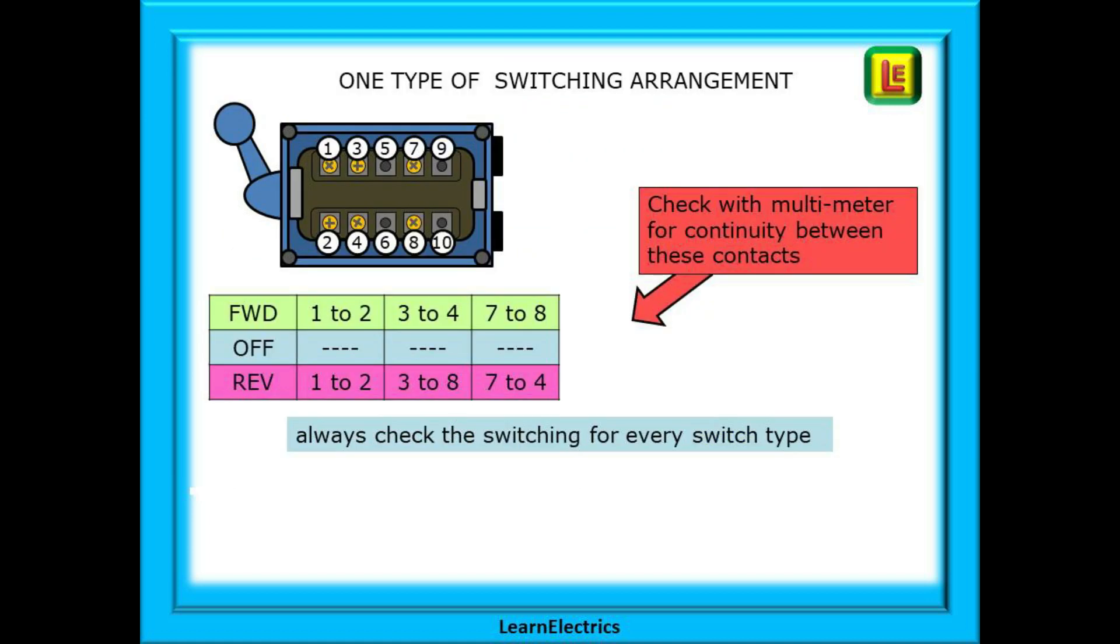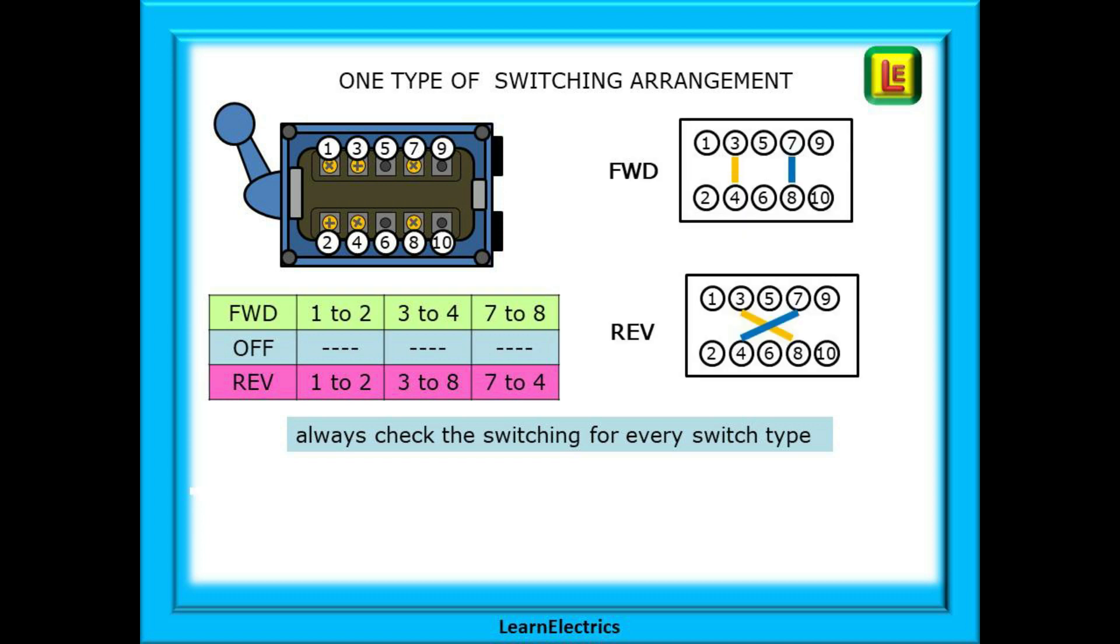Looking at these contacts we can see that in the forward direction we have a straight through arrangement: one to two, three to four and seven to eight. In a reverse direction one still goes to two but the other four will cross over, three to eight and seven to four. And in the off position nothing is connected to anything else. Always check your own switch contact arrangements.